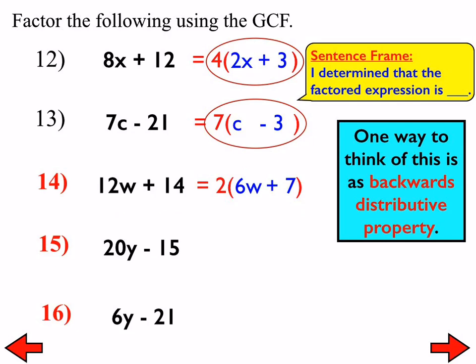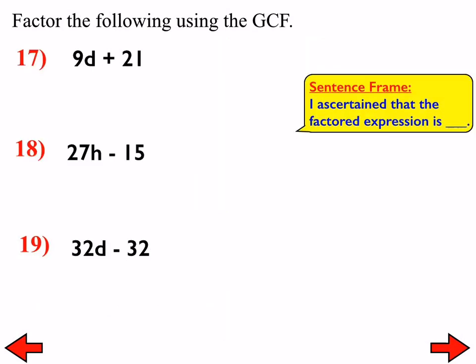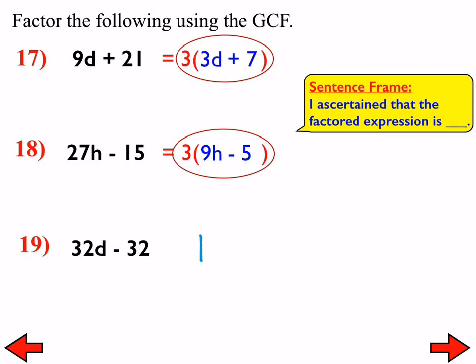All right, number 15 should be 5 times the quantity of 4y minus 3. And, number 16 should be 3 times the quantity of 2y minus 7. All right, so now, go ahead and do 17, 18, and 19. So, number 17 should be 3 times the quantity of 3d plus 7. Number 18 should be 3 times the quantity of 9h minus 5. And, that brings us to number 19. Somebody over here, I won't point them out, but here's what they had the first time.